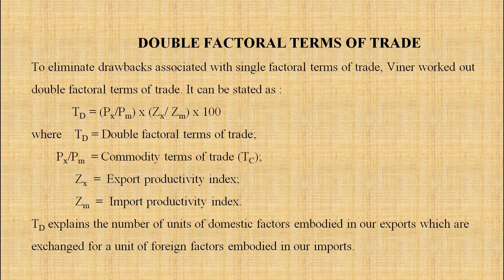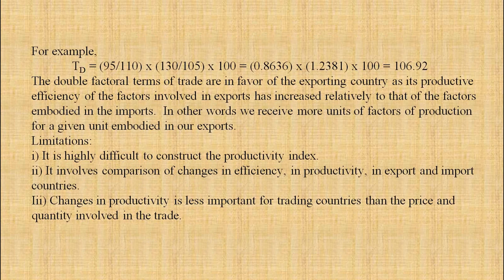Double factorial terms of trade. To eliminate the drawbacks associated with single factorial terms of trade, Wiener worked out double factorial terms of trade. It can be stated as: TD = (Px / Pm) × (Zx / Zm) × 100, where TD is double factorial terms of trade, Px/Pm is commodity terms of trade, Zx is the export productivity index, and Zm is the import productivity index. TD explains the number of units of domestic factors embodied in exports which are exchanged for a unit of foreign factors embodied in imports.